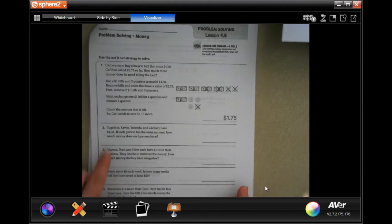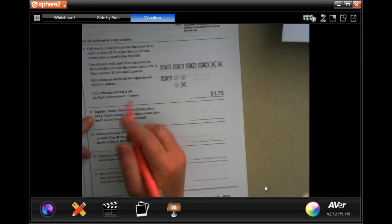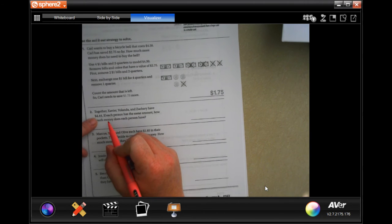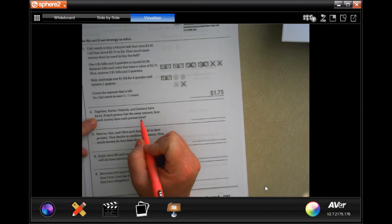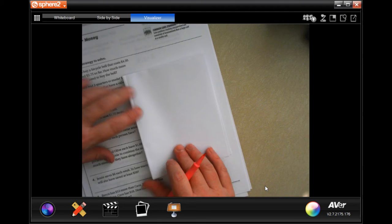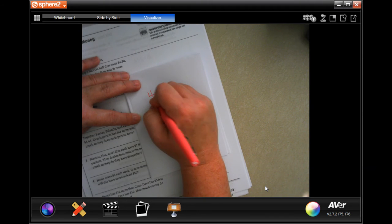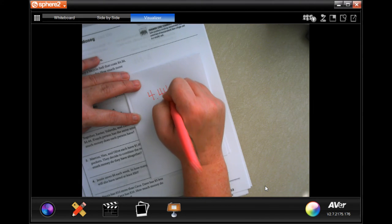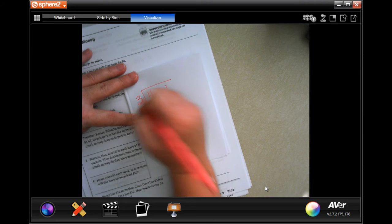We're going to go down to number two. It says together Xavier, Yolanda and Zachary have four dollars and forty-four cents. If each person has the same amount, how much money does each person have? Well, four dollars and 44 cents and there's three people.